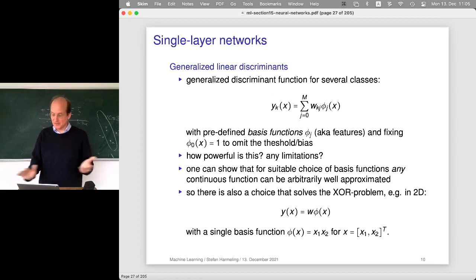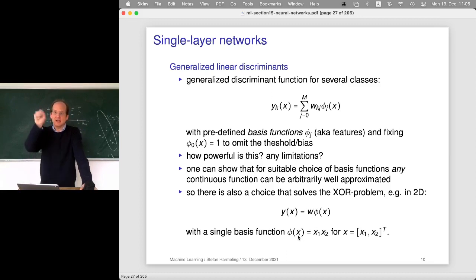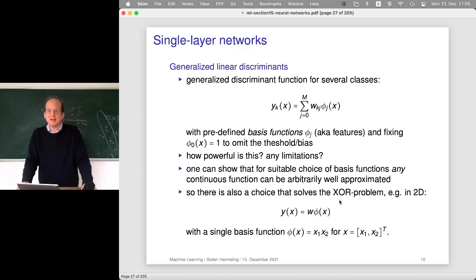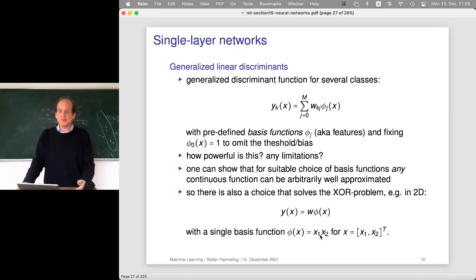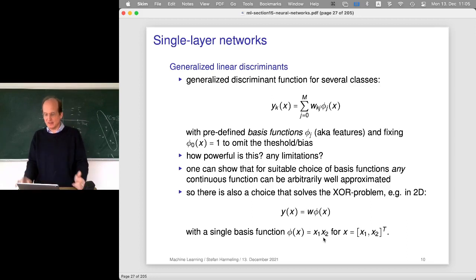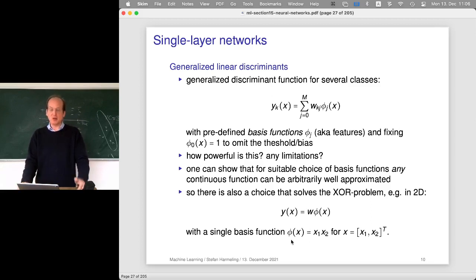We can also solve the XOR problem now. In 2D, the solution looks simple: we just take a single basis function where the basis function takes X1 and X2 in 2D and simply multiplies the two numbers. This is now a single feature which calculates exactly what we need to solve the XOR problem. Why does it work? Two positive numbers give something positive and two negative numbers also give something positive. It shows that maybe we can learn these basis functions automatically, and by having these basis functions, there's no limit anymore.